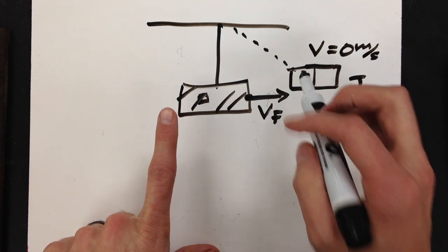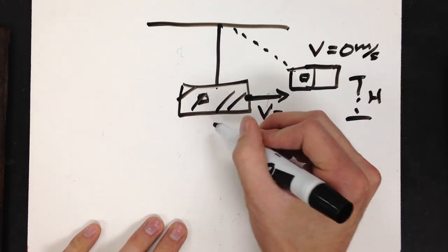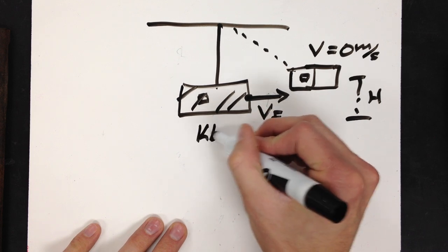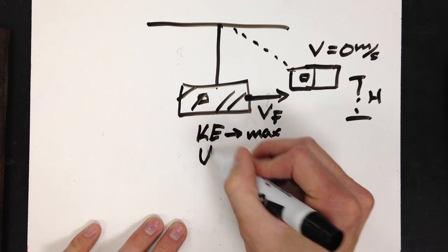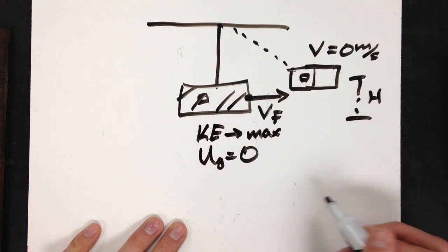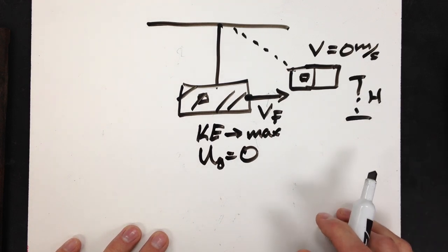Which means it has no kinetic energy, which means it has a max potential energy, which means at the bottom, at the lowest point in a pendulum swing, that is when my kinetic energy is at a maximum and my potential energy is at a minimum, or zero, because we can think of my height being zero.